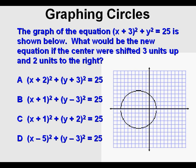Let's try a problem. The graph of the equation (x + 3)² + y² = 25 as shown below. What would be the new equation if the center were shifted 3 units up and 2 units to the right?